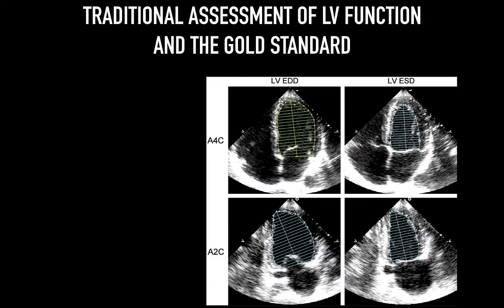Traditional assessment of LV function makes use of the Simpson's method, which makes a measurement of the LV cavity in two separate planes: the apical four-chamber and a view that's orthogonal, or 90 degrees to this, called the apical two-chamber. This is a biplane measurement that assumes a series of discs along the LV cavity, given the LV is conical. With this measurement in end-systole and diastole, an exact EF can be calculated.